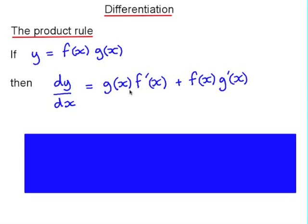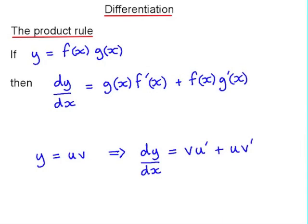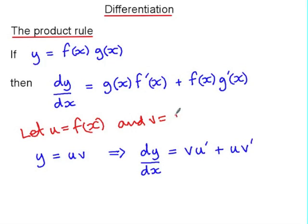Some people find it helpful to say this as the derivative of the first function multiplied by the second function, plus the derivative of the second function multiplied by the first function. This notation can be a bit confusing, so another notation is to use u and v as the functions f and g. If we say that u is the first function and v is the second function, then y can be expressed as uv, and dy/dx is v u dash plus u v dash.